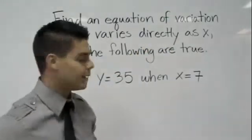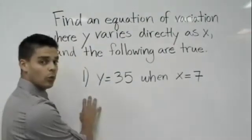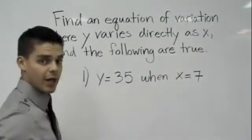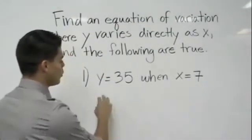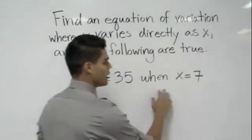Now that we know that they vary directly, we can use example 1 and write a direct variation equation for it. Y is equal to 35 when X is equal to 7.